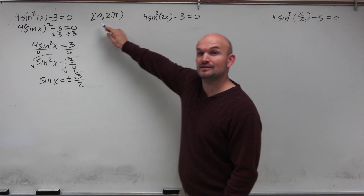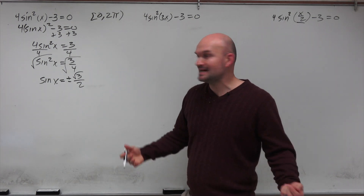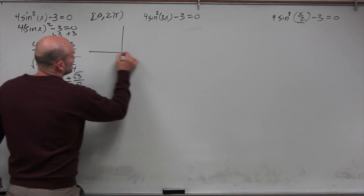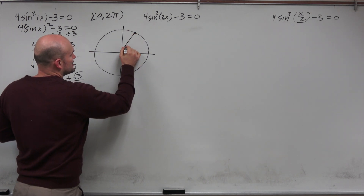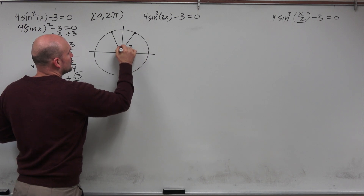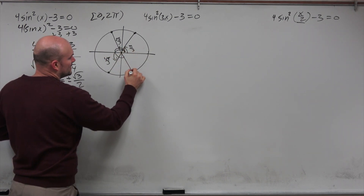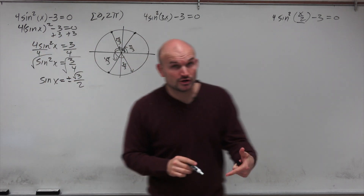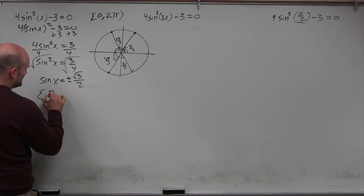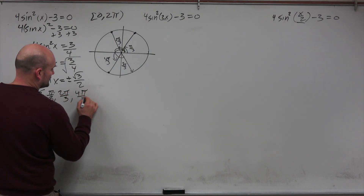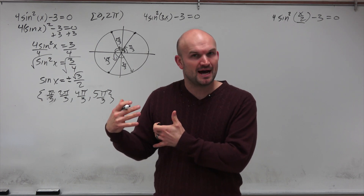We're only looking for solutions on the unit circle, on the interval 0 to 2π. Looking at the unit circle, sine of x equals square root of 3 over 2 at π/3 and 2π/3, and sine of x equals negative square root of 3 over 2 at 4π/3 and 5π/3. So the four solutions on [0, 2π] are π/3, 2π/3, 4π/3, and 5π/3.